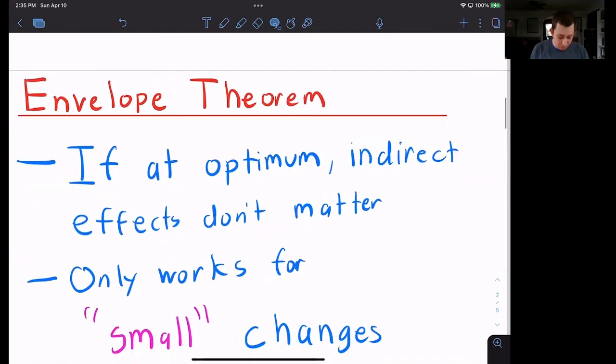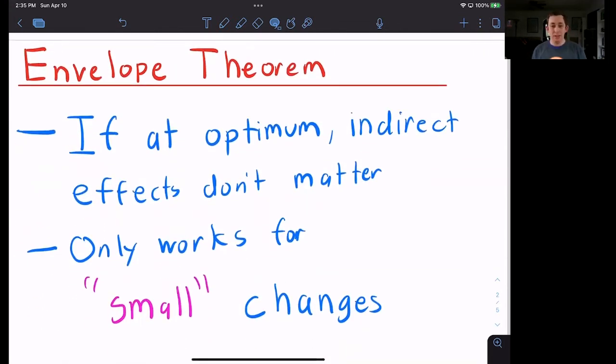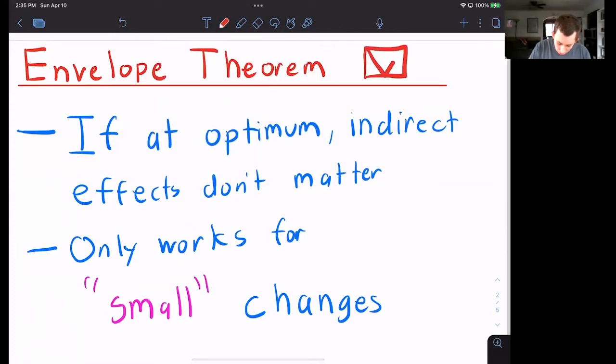So I am just going to very quickly review this. And all the envelope theorem says is that if we're at the optimum, our indirect effects don't matter. But remember, this only works for small changes. So we're talking about marginal changes, not very large changes, because remember, on that graph, large changes get away from that nice flat curve.